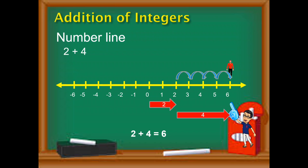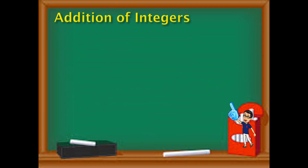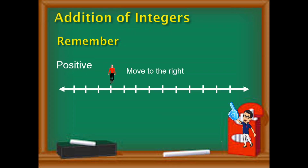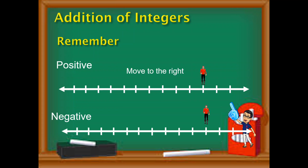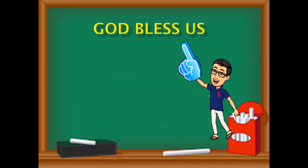I hope that you learned how to use the number line. Just remember: when adding positive integers, you move to the right; when adding negative integers, you move to the left. God bless. Thank you.